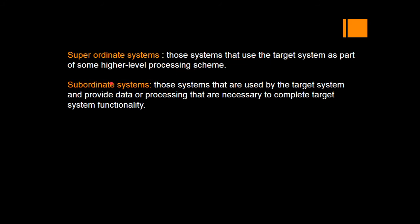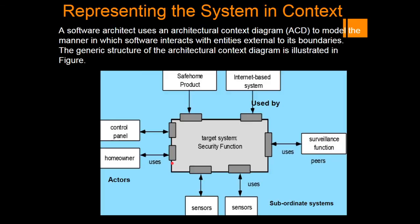Subordinate systems are those systems that are used by the target system or provide data and processing necessary to complete the target system's functionalities. When you are using the 'uses' relationship, that is the superordinate system, and these are all the subordinate systems shown here in the diagram.